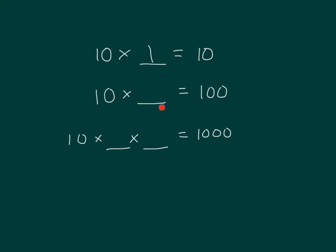10 times what equals 100? Right, 10. How many times do we have to multiply 10 together to get a thousand? Three times. So that's 10 to the third power. We're multiplying 10 times 10 times 10. 100 is 10 squared, 10 times 10.